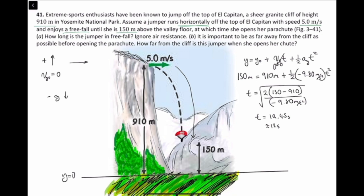That is how long she was in free fall. For part b, how far from the cliff is the jumper when she opens her chute? Starting from a point, ending at a point, she starts from zero. Her final point is going to be r, which is the range. Final point minus initial point equals r.